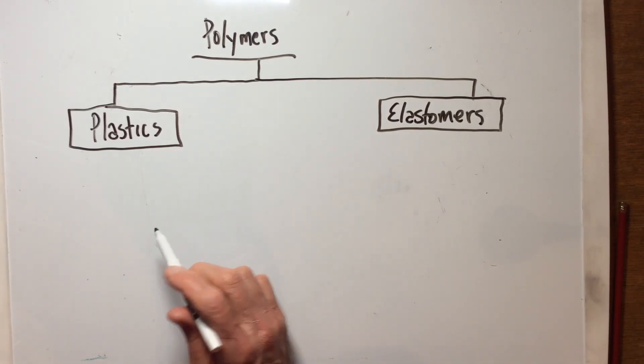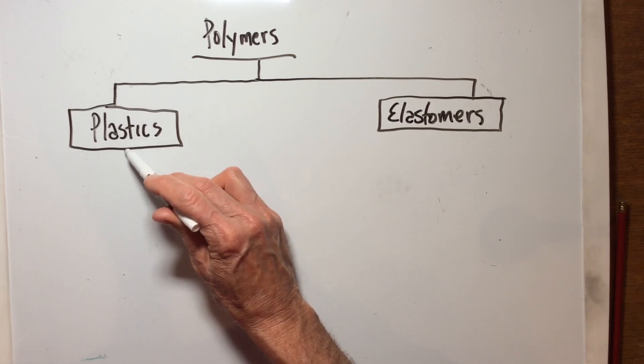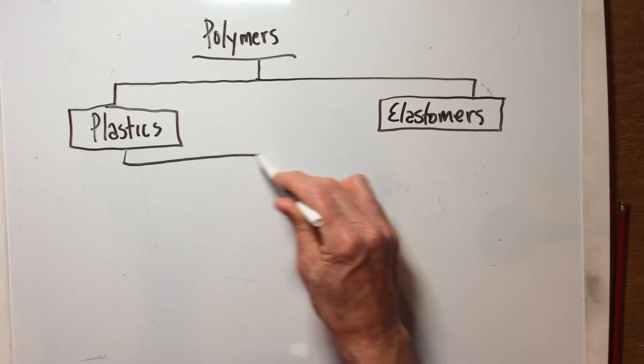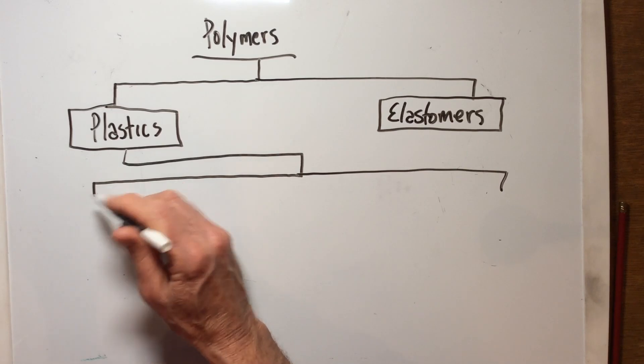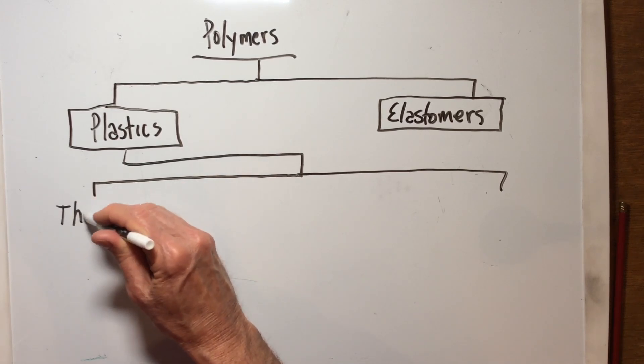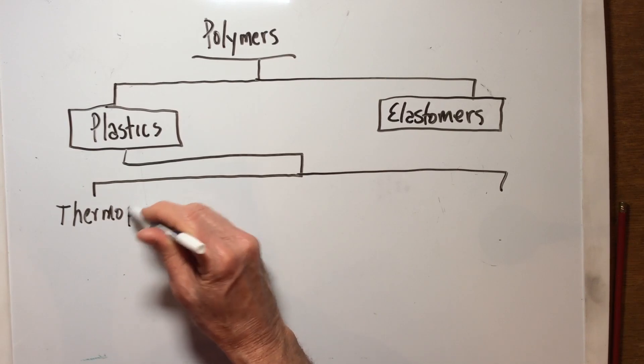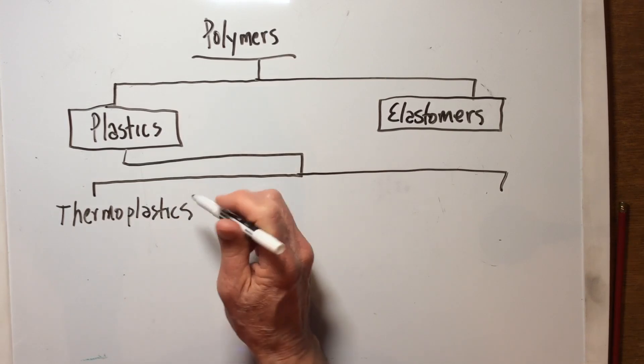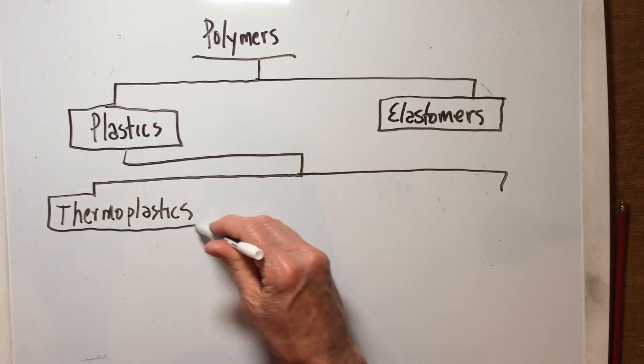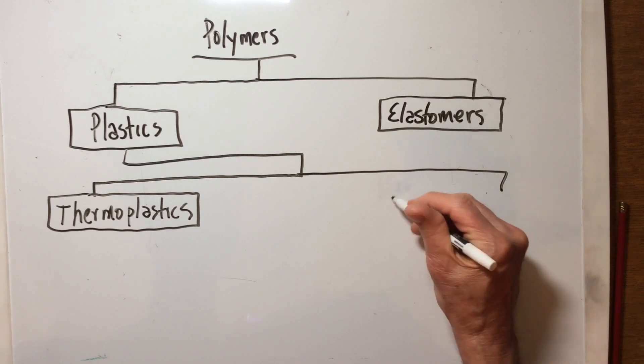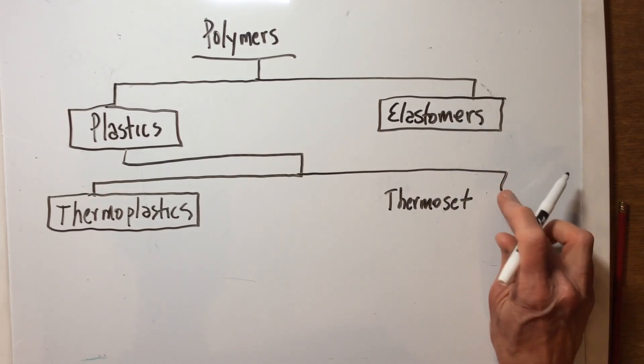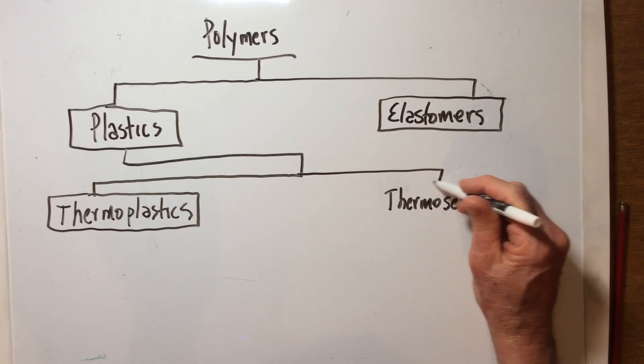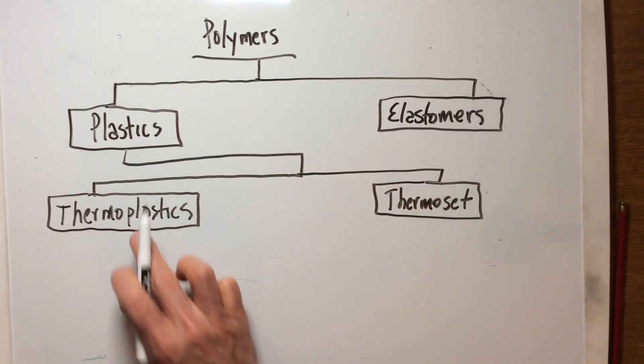From here we're going to take this and bifurcate this into two main major headings. The first heading we're going to call thermoplastics, major category of plastics, and the other one we're going to call thermoset plastics. So we have thermoplastics and thermoset.